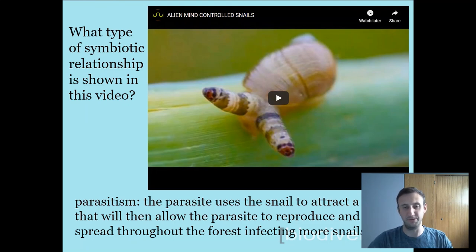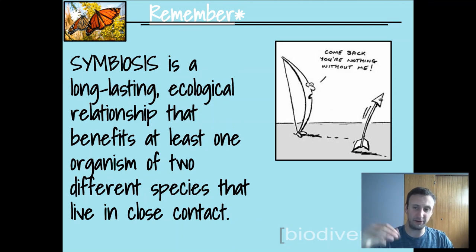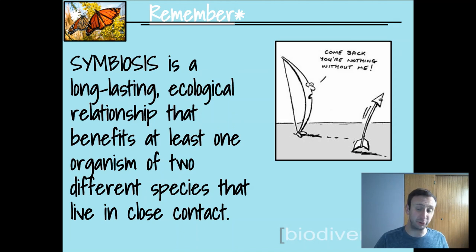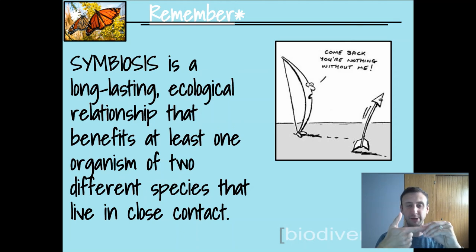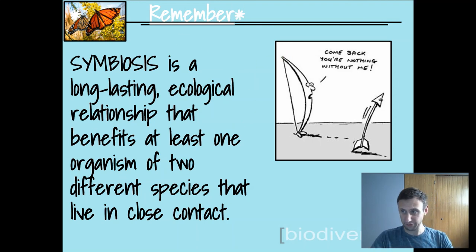At the end of the day, symbiosis is a long-lasting ecological relationship that benefits at least one organism of two different species that live in close contact. We have three types: parasitism, where one benefits and one is harmed; commensalism, where one benefits and the other is unaffected; and mutualism, where both benefit.